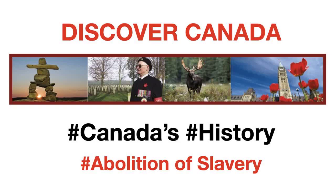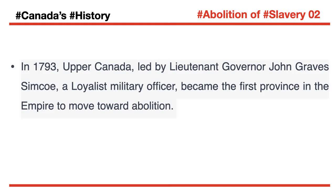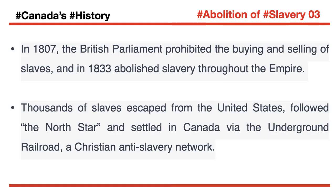Slavery has existed all over the world, from Asia, Africa and the Middle East to the Americas. The first movement to abolish the transatlantic slave trade emerged in the British Parliament in the late 1700s. In 1793, Upper Canada, led by Lieutenant Governor John Graves Simcoe, a Loyalist military officer, became the first province in the empire to move toward abolition. In 1807, the British Parliament prohibited the buying and selling of slaves, and in 1833 abolished slavery throughout the empire. Thousands of slaves escaped from the United States, followed the North Star, and settled in Canada via the Underground Railroad, a Christian anti-slavery network.